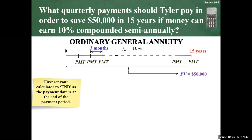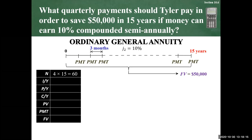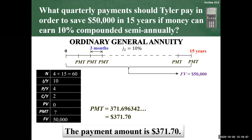For those using the Texas BA II Plus calculator, remember this is an ordinary general annuity, so set the calculator to END. Turn the calculator on, hit Second Function then the BGN button; if END isn't showing, hit Second and Enter. Once END appears, clear the screen. Enter N = 60, nominal rate = 10, payments per year = 4 for quarterly, compounding per year = 2 for semi-annual, present value = 0, future value = $50,000, then hit CPT for payment. You'll get $371.696..., which rounds to $371.70.